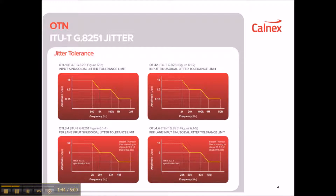Here are the masks for OTN. As for SyncE, there are pass-fail masks for controlled Jitter applied by test equipment, with different masks for each OTN interface, and the plotted results must be above the mask. There are four masks. The top left shows the mask for OTU1 at 2.7 Gbps, covering a frequency range up to 2MHz, starting at 15 UI and finishing at 0.15 UI at 2MHz. Then OTU2, OTU3, and finally OTU4, covering a frequency range up to 200MHz, with amplitudes starting at 15 UI peak-to-peak and finishing at 0.15 UI at 200MHz.